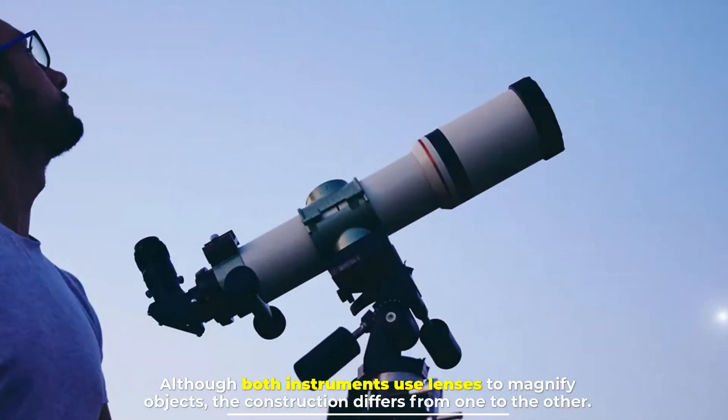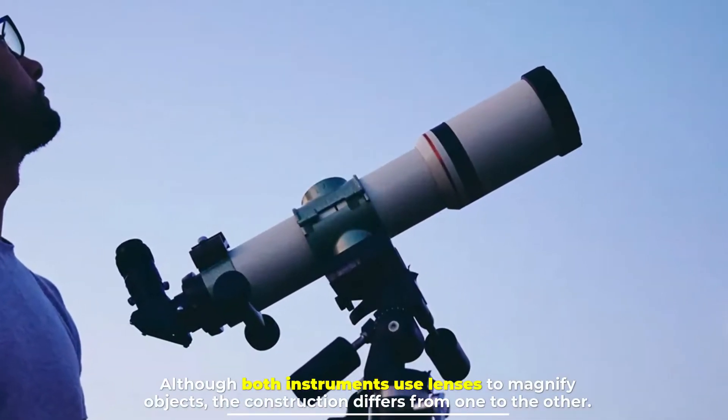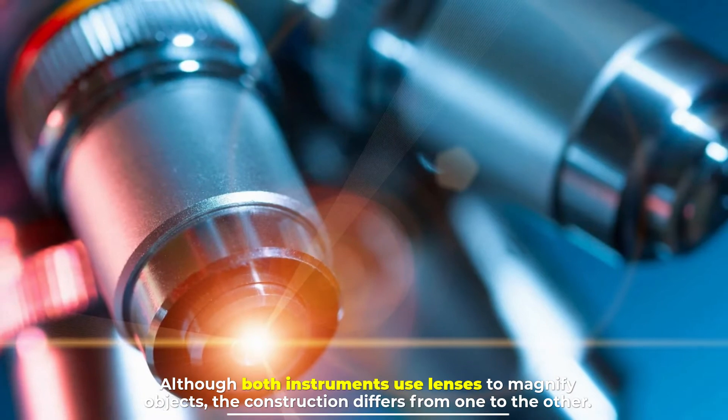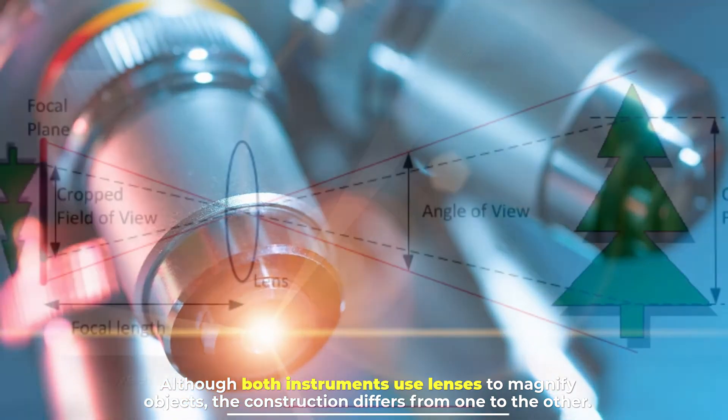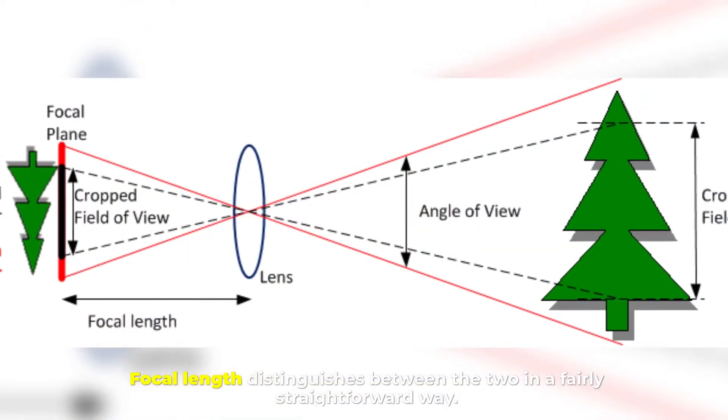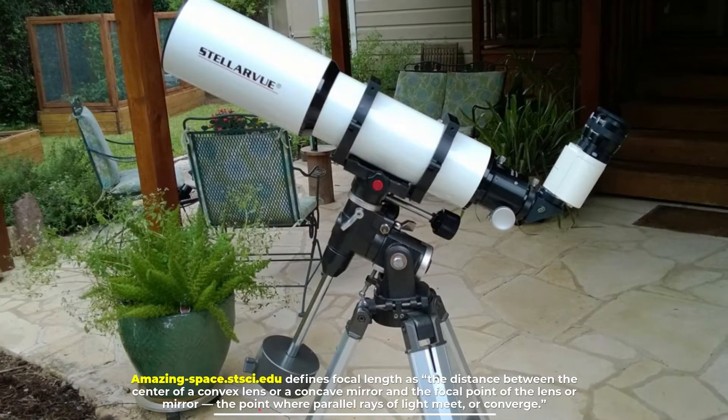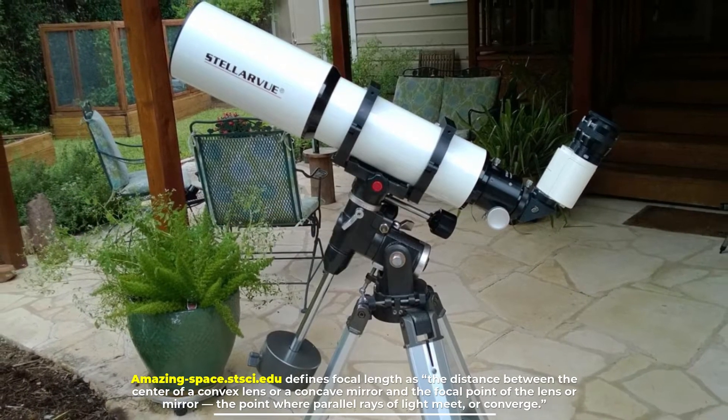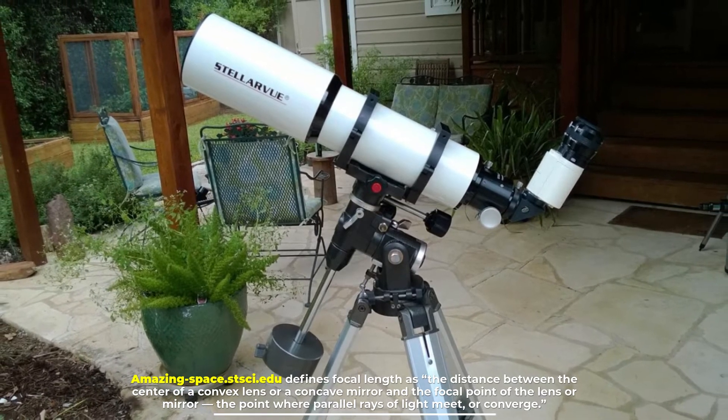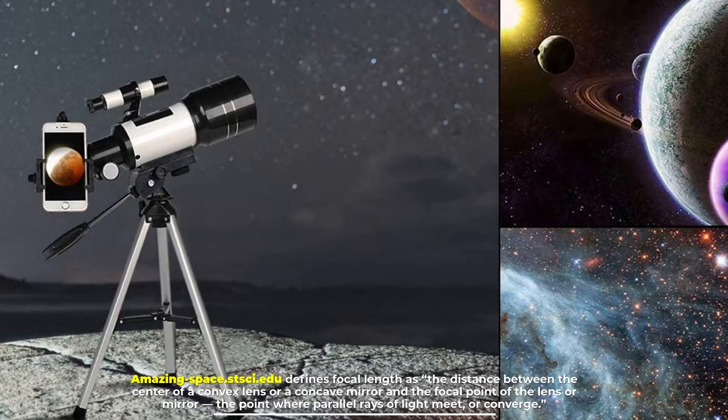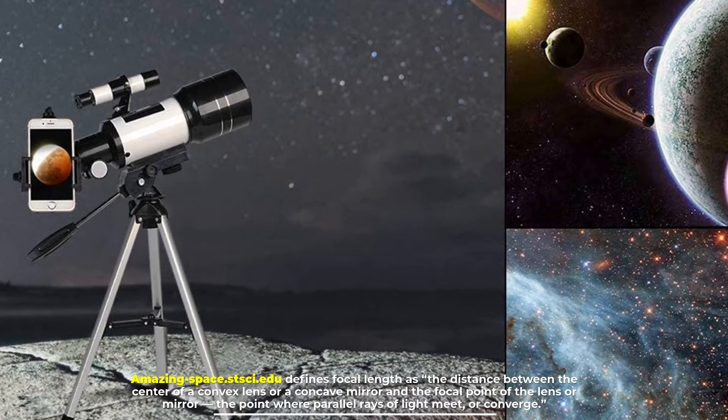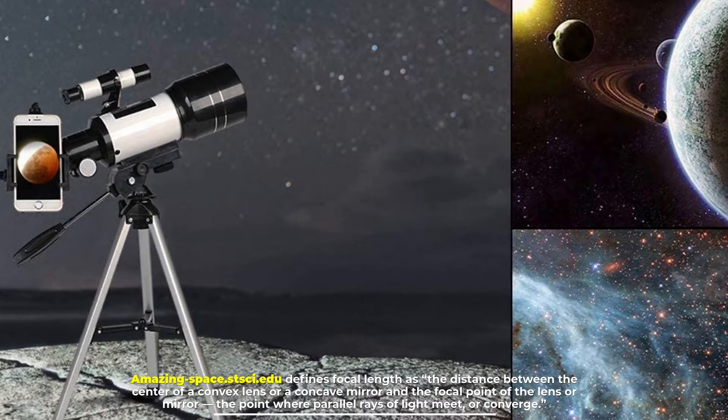Number two: focal length. Although both instruments use lenses to magnify objects, the construction differs from one to the other. Focal length distinguishes between the two in a fairly straightforward way. Focal length is defined as the distance between the center of a convex lens or a concave mirror and the focal point of the lens or mirror, the point where parallel rays of light meet or converge.